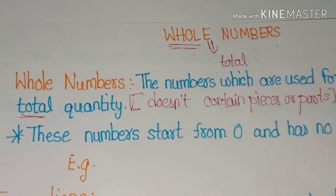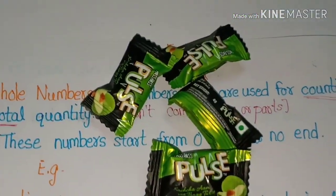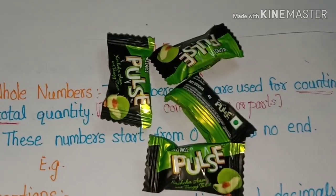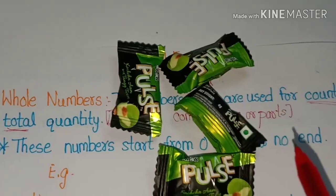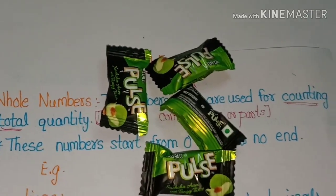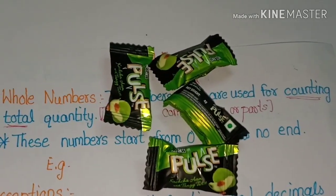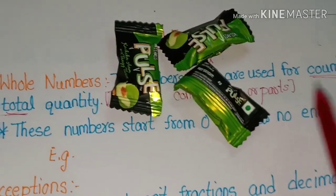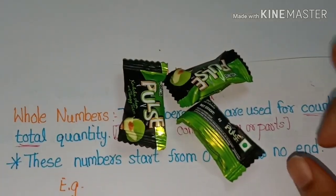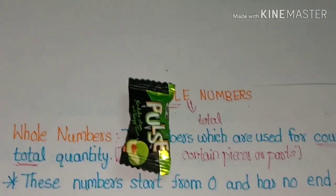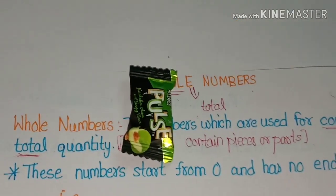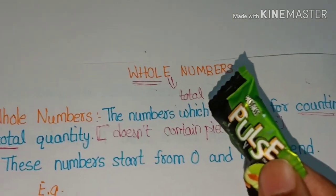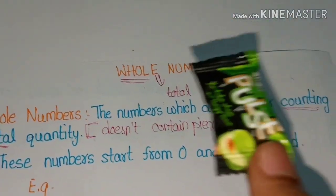Let's take an example. We have some chocolates and we count them: 1, 2, 3, 4. When someone asks how many chocolates you have, you say 4 — it represents the total quantity, so 4 is a whole number. If one is taken away you say 3, also a whole number. If two more are taken you have 1 chocolate left — it represents the full quantity, not half eaten, so 1 is also a whole number.